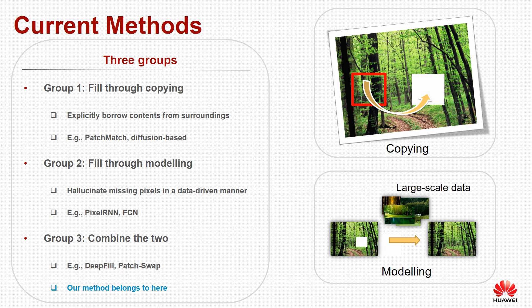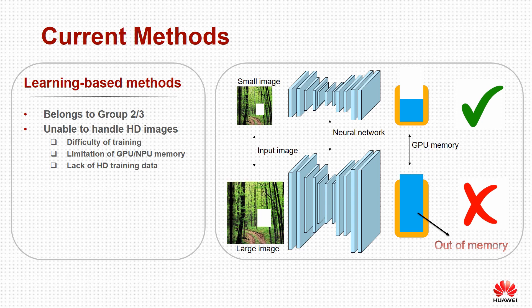Our proposed method belongs to the third group. Learning-based methods in group 2 or group 3 typically employ a convolutional network and directly feed the input image and mask to the network to predict the inpainted result. When the input image size increases, memory occupancy can become extremely high, eventually causing out-of-memory errors. This is the major reason prior learning-based methods cannot handle high-resolution images. Other reasons include difficulty of training and lack of high-resolution training data.